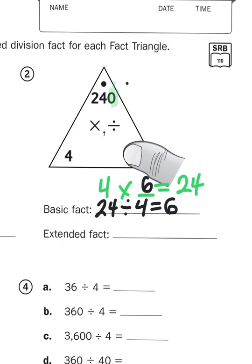So my basic division fact is 24 divided into 4 groups would give me 6 in each group. Now, since I have a 0 right here behind the 24, making it 24 tens, also known as 240, I'm going to extend that fact by basically dropping a 0 right here. 24 tens divided by 4 is going to give me 6 tens, otherwise known as 60.